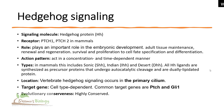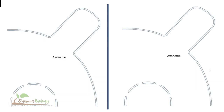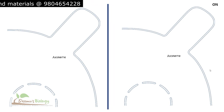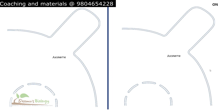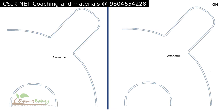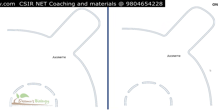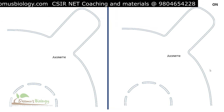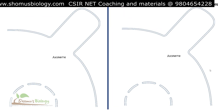Now let's look at the Hedgehog signaling animation. There are two images: on the left side we'll talk about the process of Hedgehog signaling when there is no Hedgehog protein — signaling will be off. On the right side, we'll see the situation where Hedgehog signaling is on, in the presence of the Hedgehog molecule.